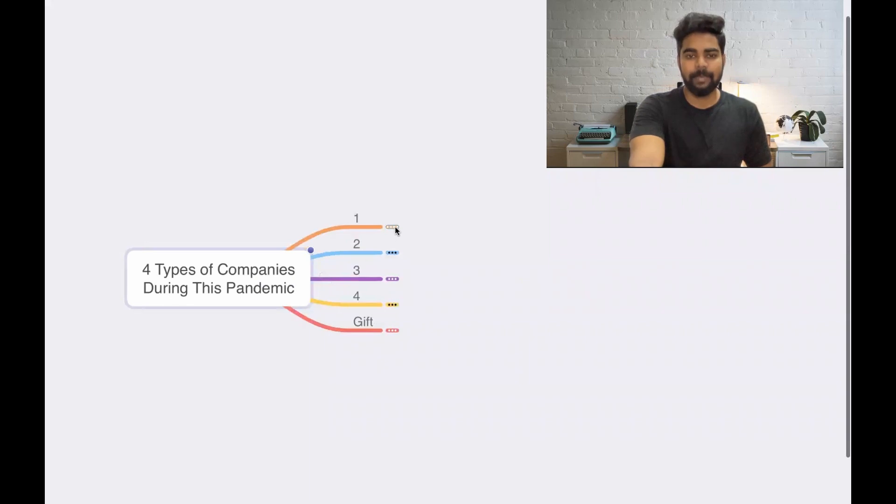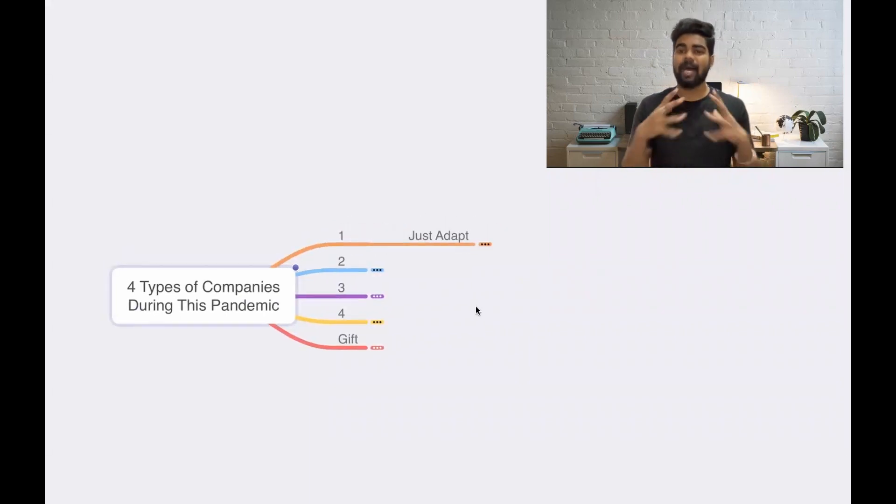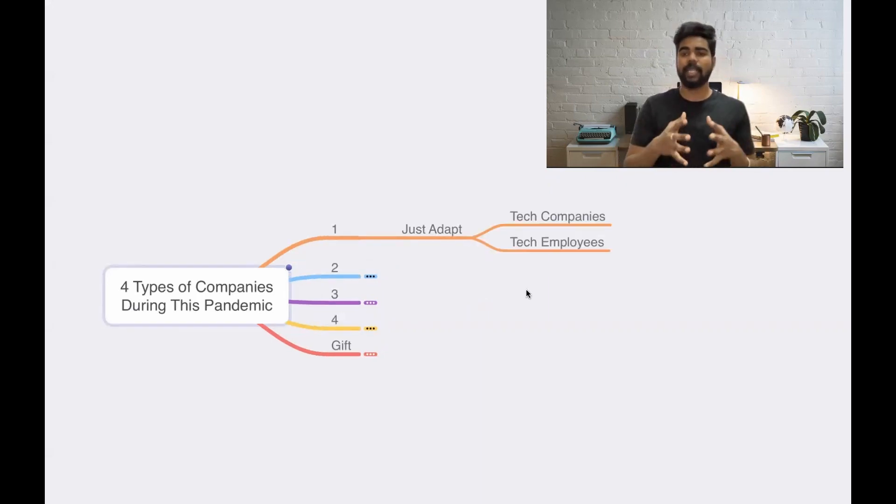The first type of category is they just adapt during the situation. They didn't face any problem during this pandemic. Those kinds of companies, companies who are into technology, companies who are into software and all those kinds of companies, they did not face any problems because they already have their laptop. And the people who are also working in the company are tech savvy.